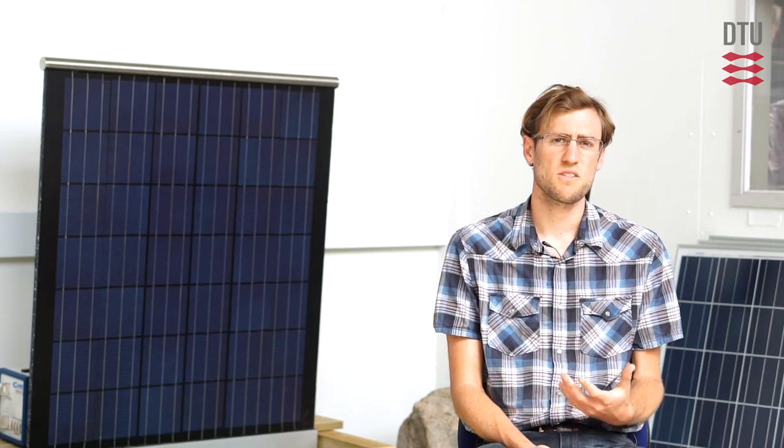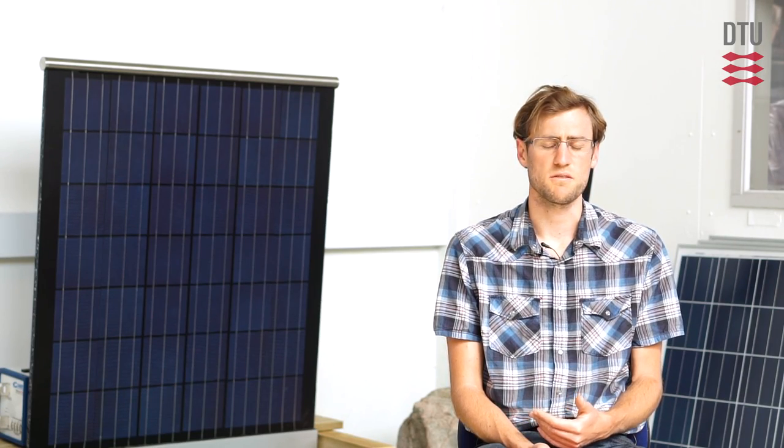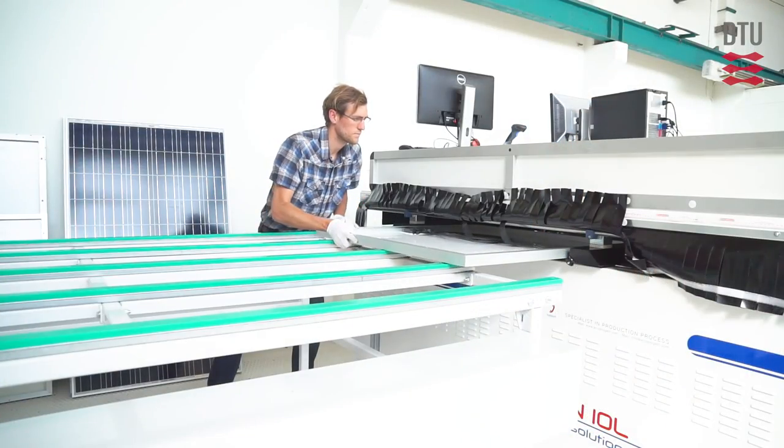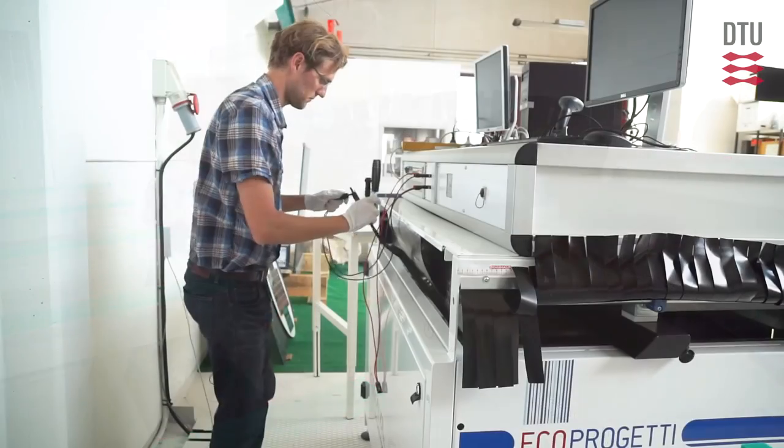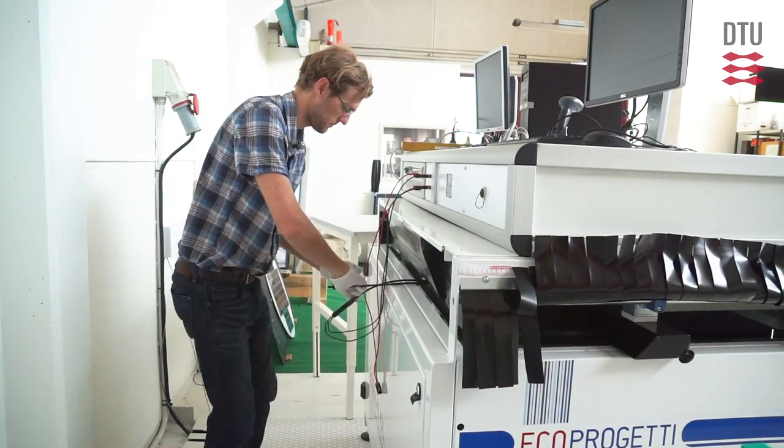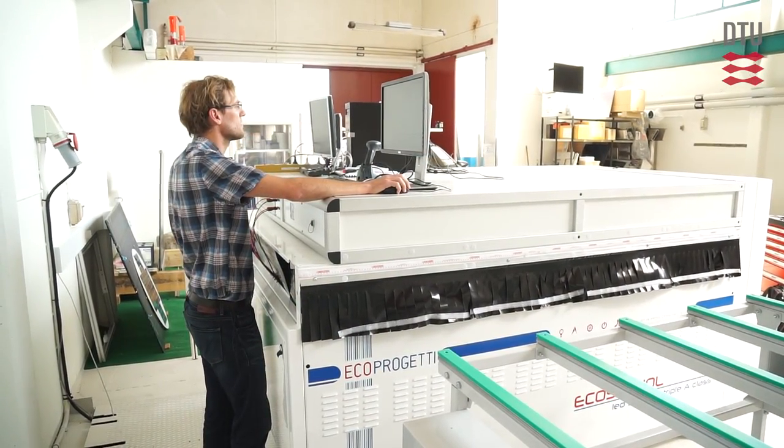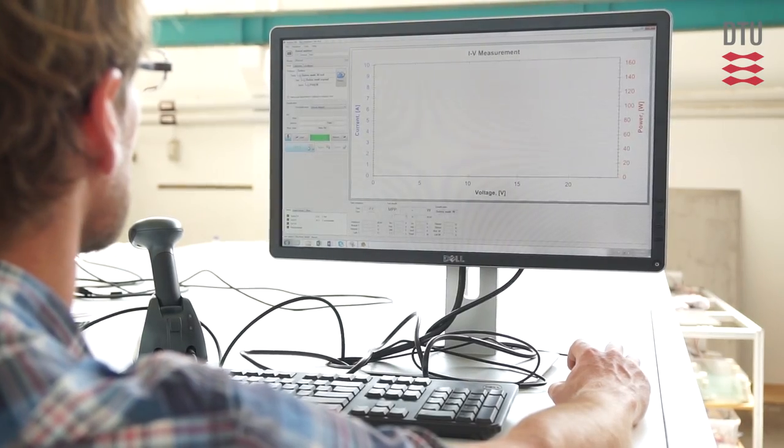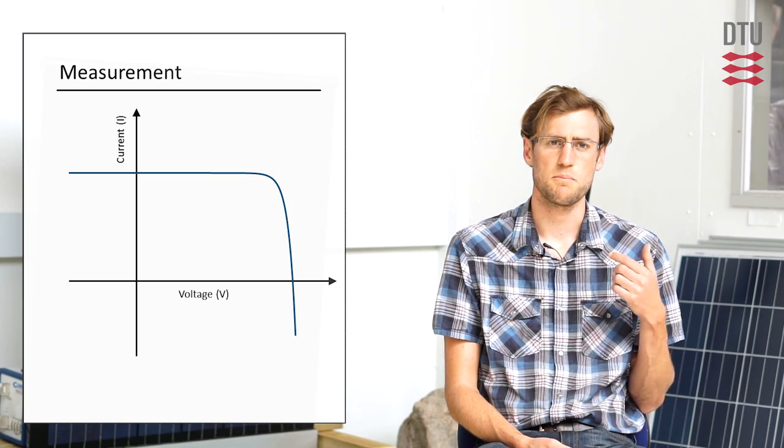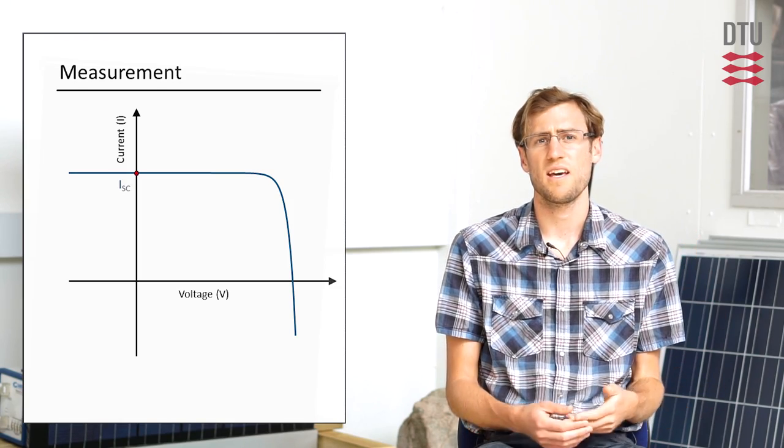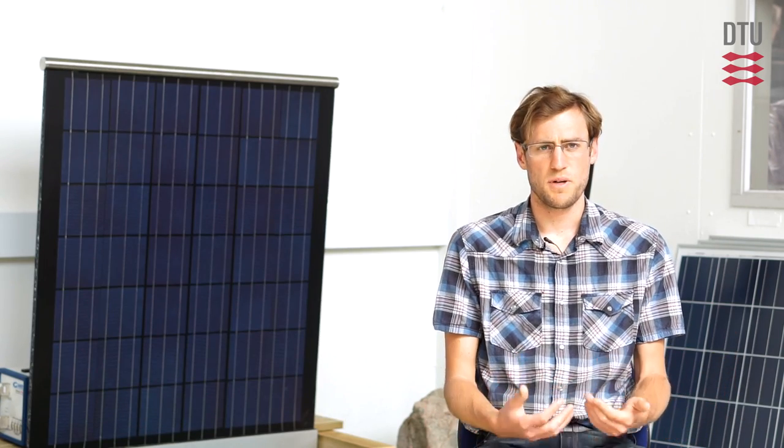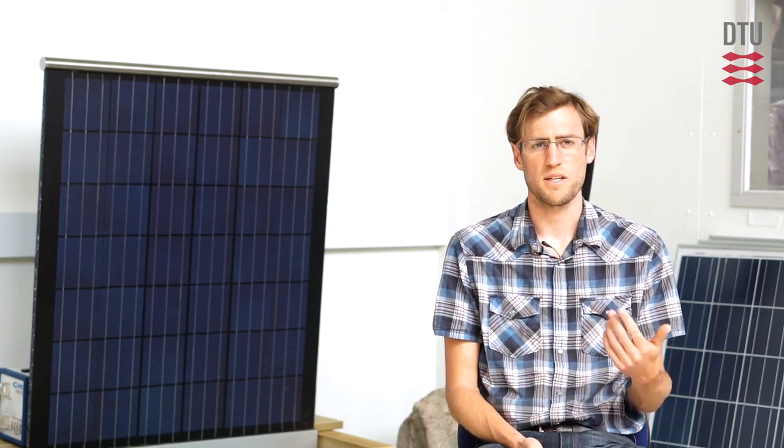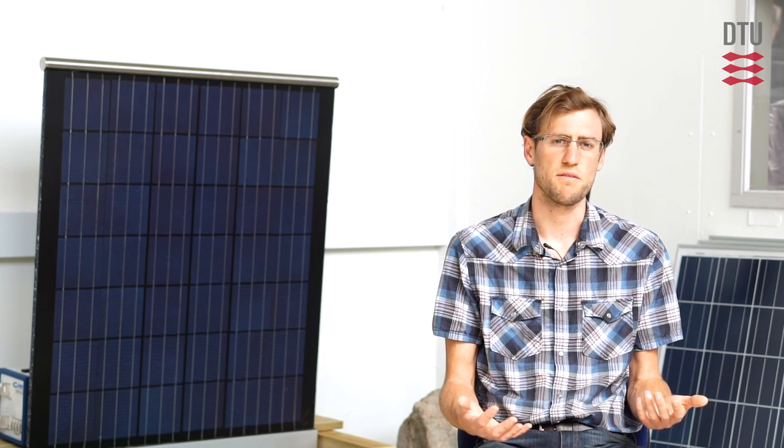There's a number of methods you can use to measure the IV curve. And the method you choose will likely depend on your need for accuracy, the cost or your budget, or your need for modularity. So are you measuring a single module? Are you measuring a string of modules at high voltage? Whichever method you choose, it's important to have a measurement circuit that can operate at both ISC and VOC. So those are the two extremes of your IV curve. So let's look at some possible methods, some possible circuits to measure your IV curve.